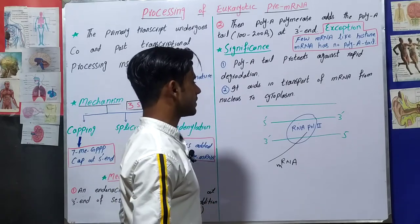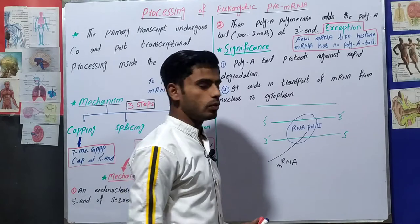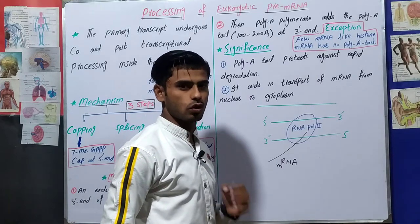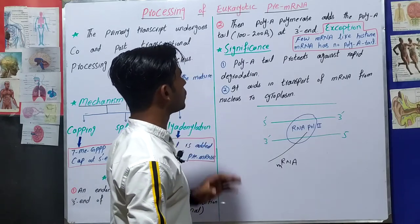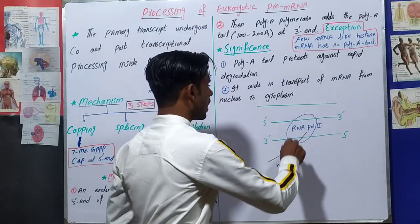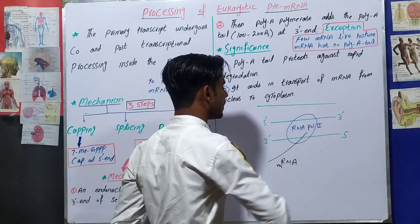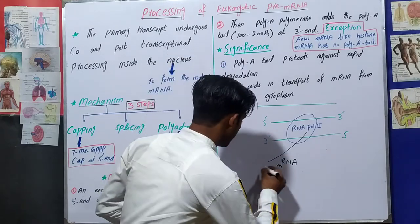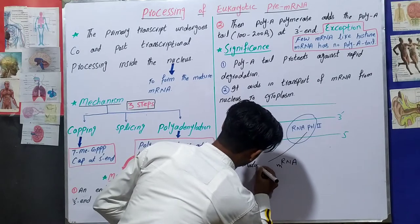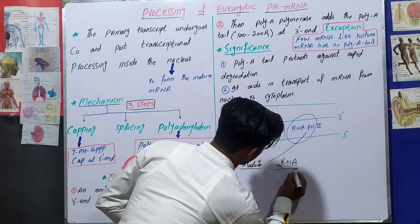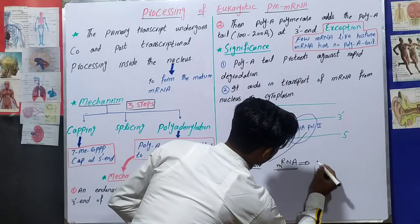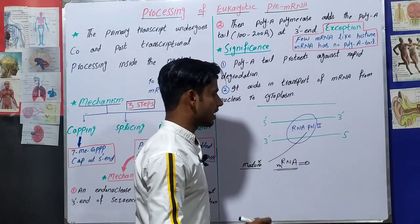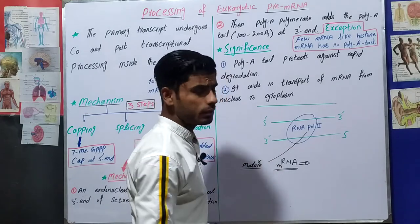In prokaryotes, RNA polymerase II acts on the DNA double-stranded molecule and forms the messenger RNA, which is the complete mature messenger RNA. But in eukaryotic transcription, RNA polymerase II acts on the DNA and forms a messenger RNA that is NOT a mature messenger RNA. This is called the primary transcript, the immature messenger RNA, or the pre-messenger RNA.